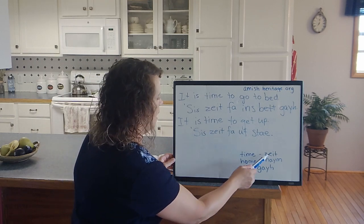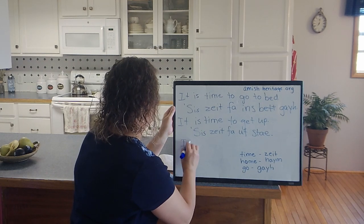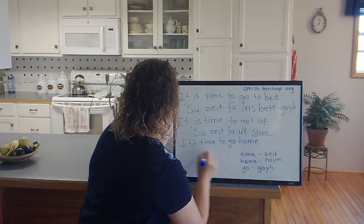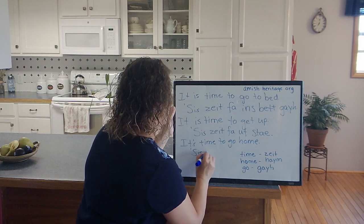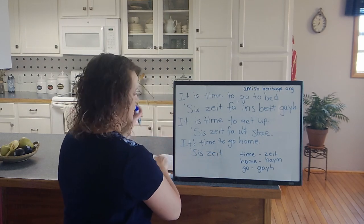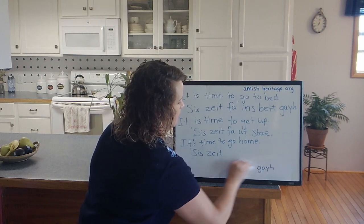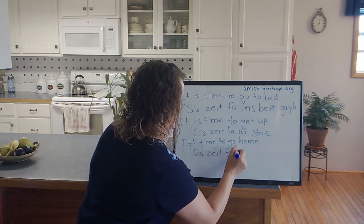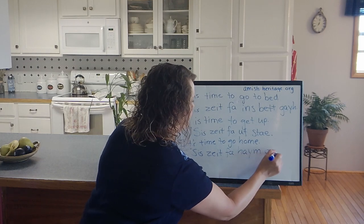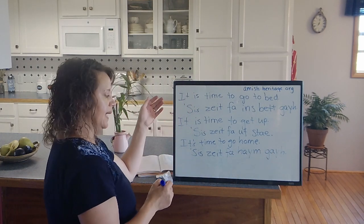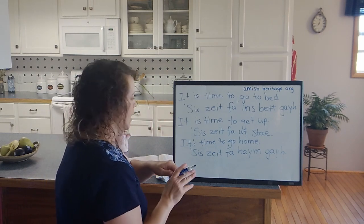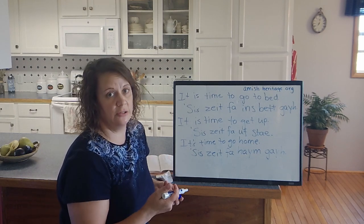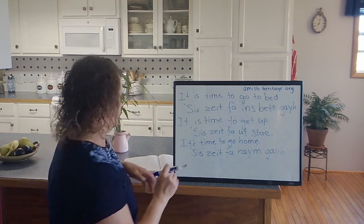So time is tight. You could say it's time to go home. Sis tight, let me get rid of this. Tight is time, ham is home, and ga is go. Sis tight fa ham ga. It's time to go home, sis tight fa ham ga. If you ever have specific phrases that you'd like for me to teach you, leave it in the comments and I will try to get it to you.